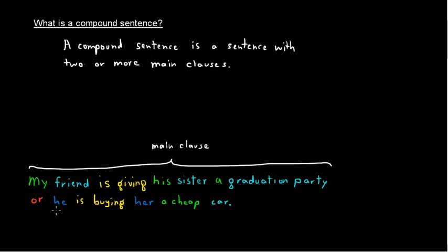Okay, but now we have this other one. He is buying her a cheap car. Okay, that also could stand alone as a sentence. So that is another main clause.